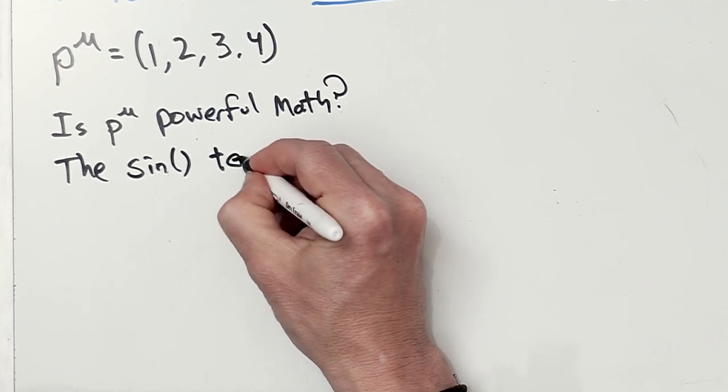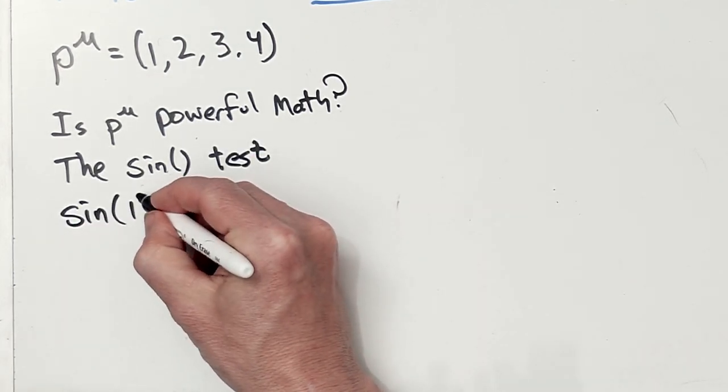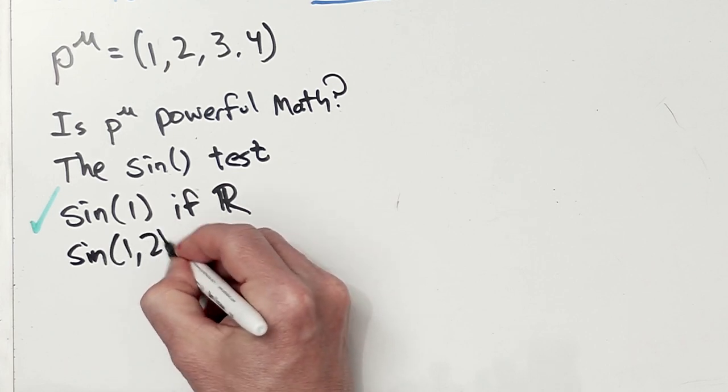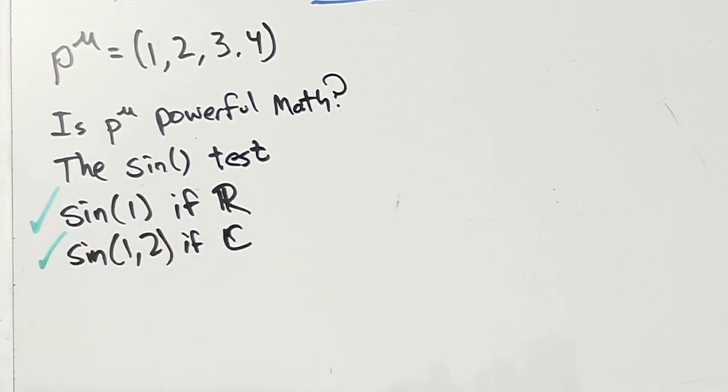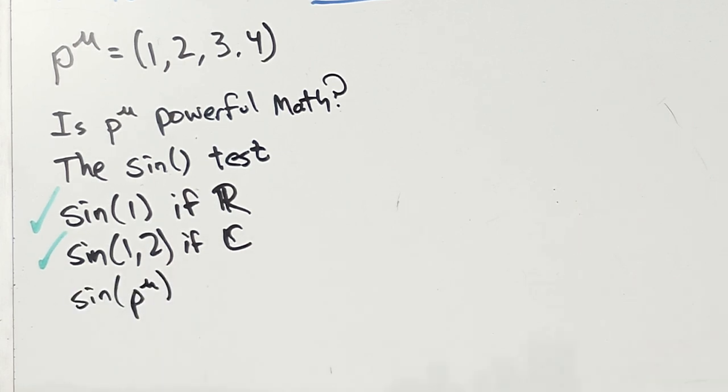So I came up with what I call the sine test. The sine of one makes sense, as long as one's like a real number. The sine of (1, 2) also makes sense if that's a complex number. And the sine of a four vector, no, because multiplication doesn't make sense there.